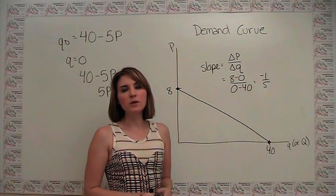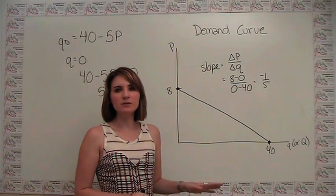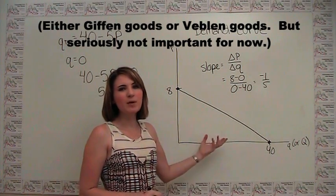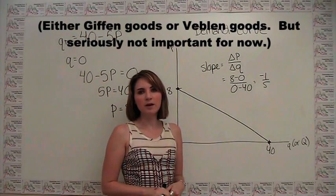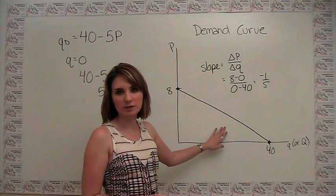In theory, we could have a demand curve that would slope upwards, and we do have names for those types of things. But in practice, those examples are very hard to find, so we can say that in the vast majority of cases, demand curves in fact do go in this direction.